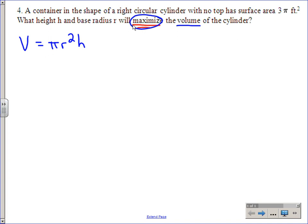The first sentence says a container in the shape of a right circular cylinder—we're just talking about a cylinder here. It has no top, so there's nothing there, but there is a bottom. We're told that the surface area of that cylinder is 3π square feet.